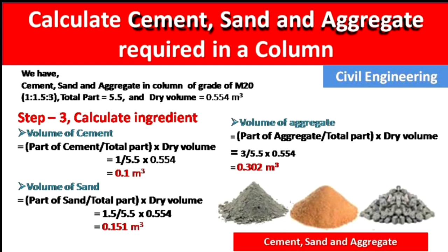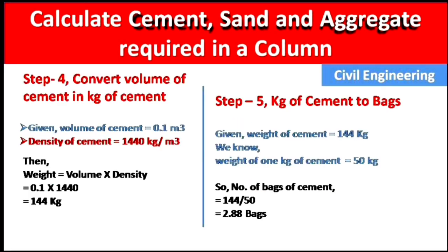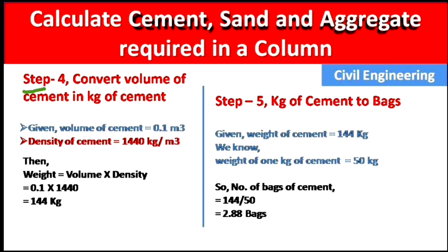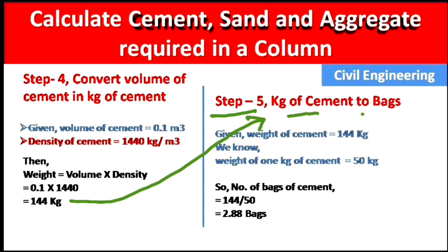In Step 4, we convert the cement volume into number of bags, because sand and aggregate are measured in volume but cement is found in bags. Given: volume of cement = 0.1 m³, and density of cement = 1440 kg/m³. Weight of cement = volume × density = 0.1 × 1440 = 144 kg.